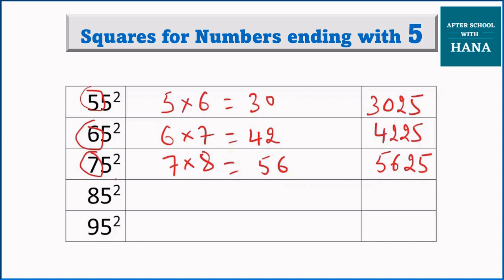75 squared. What we are going to do with 7? We will multiply it by 8. 7 times 8 is 56. So 75 squared is 5625. 85 squared. What we are going to do with 8? 8 multiply by 9. 8 multiply by 9 is 72. What will be the last two digits? 25. Very good.